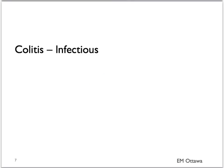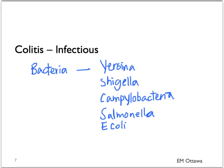Lower GI bleed caused by colitis can also be from infections. These infections cause invasion of the mucosa. The sloughing of the mucosa causes the bleeding. They can be caused by bacteria such as Yersinia, Shigella, Campylobacter, Salmonella, and E. coli.